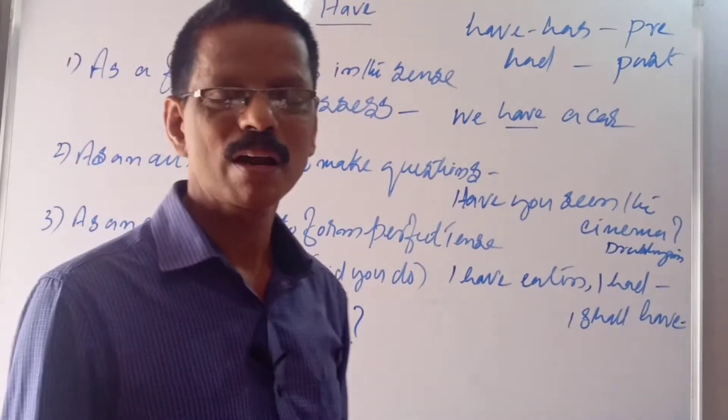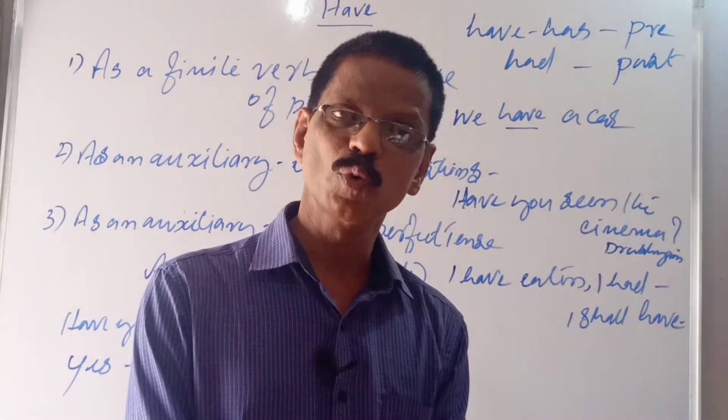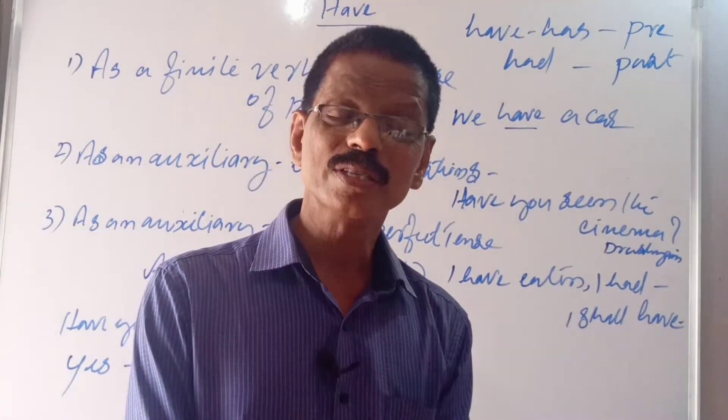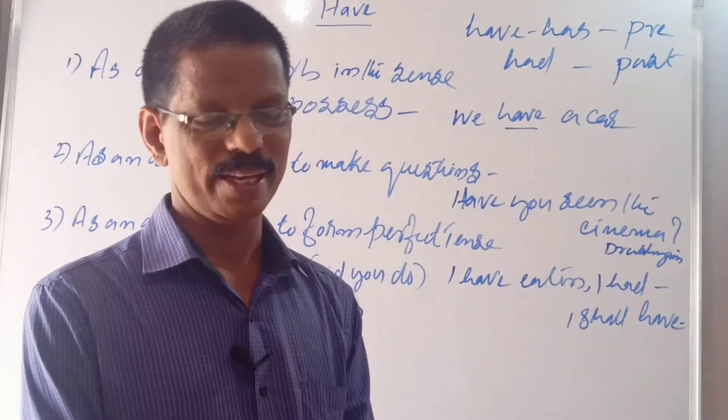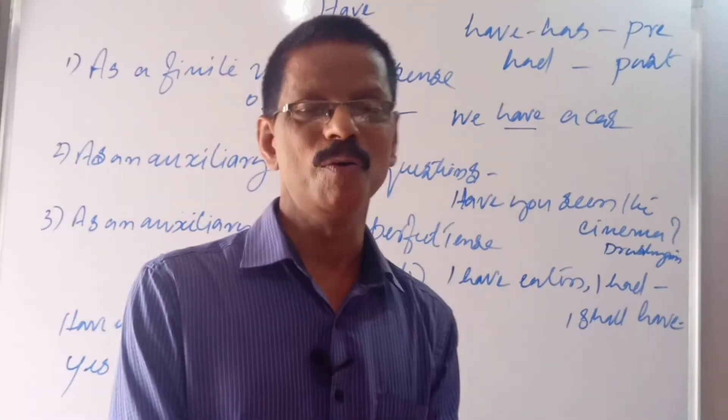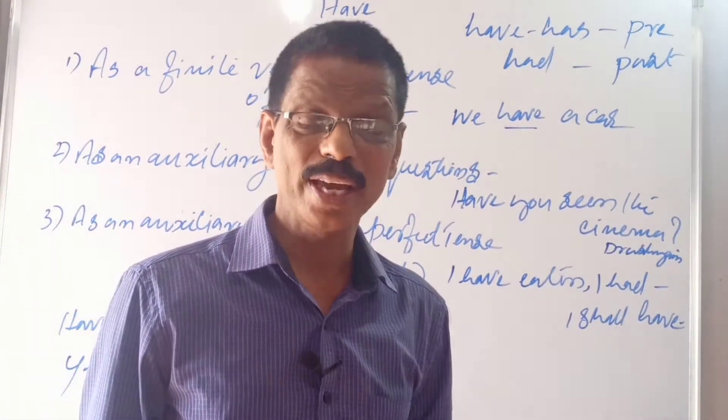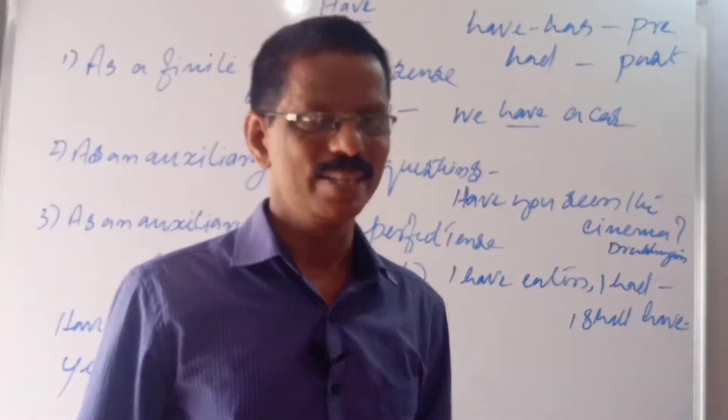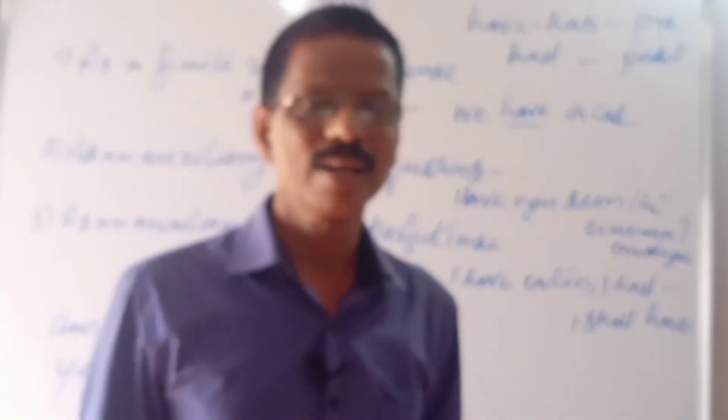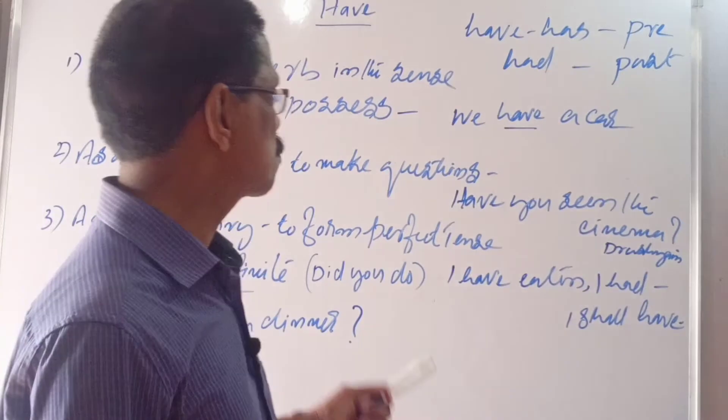As you know there are three primary auxiliaries. Auxiliaries are of two types. Auxiliary means helping verb. They are primary auxiliaries and modal auxiliaries. Primary auxiliaries are three: be, do and have.